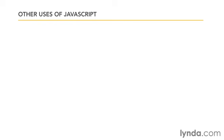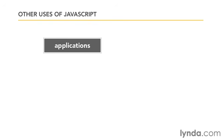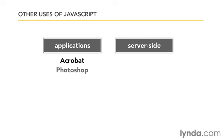A side note: JavaScript was designed to run as a scripting language using a web browser as a host program — that's why it was invented. But because it has become so popular, it has in recent years popped up as a scripting language in other applications and even in server-side products. You'll find it in things like Adobe Acrobat and Photoshop, and in server-side products like Node.js and Google Apps Script. In this course, I'm not focusing on those uses. I'm talking about classic JavaScript — a client-side language used to add interactivity to web pages. If you're interested in those other uses, learn the core of the language here and then jump into those other applications.